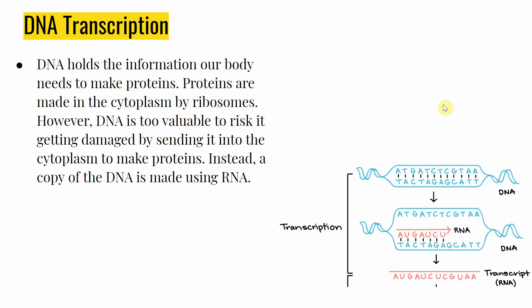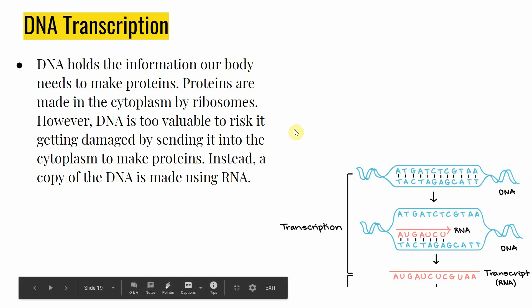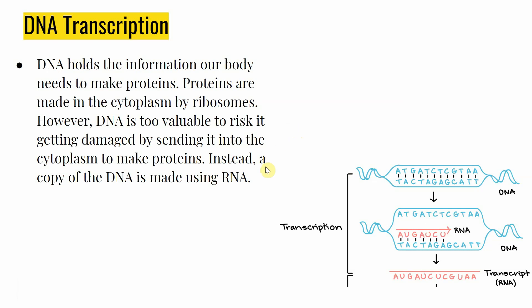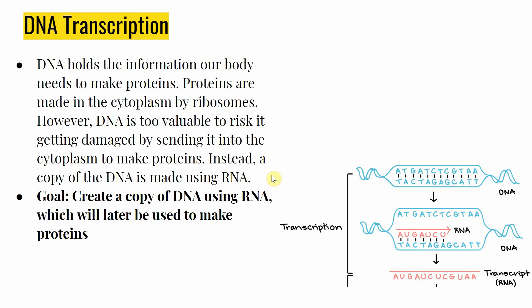As eukaryotic cells, we like to keep our DNA protected in our cell nucleus to make sure that it doesn't get damaged by something that could be in the cytoplasm. So the way evolution worked around this is by creating an intermediate molecule — making a copy of the information in our DNA using RNA. The overall goal of DNA transcription is to create a copy of DNA using RNA, which will later be used to make proteins.